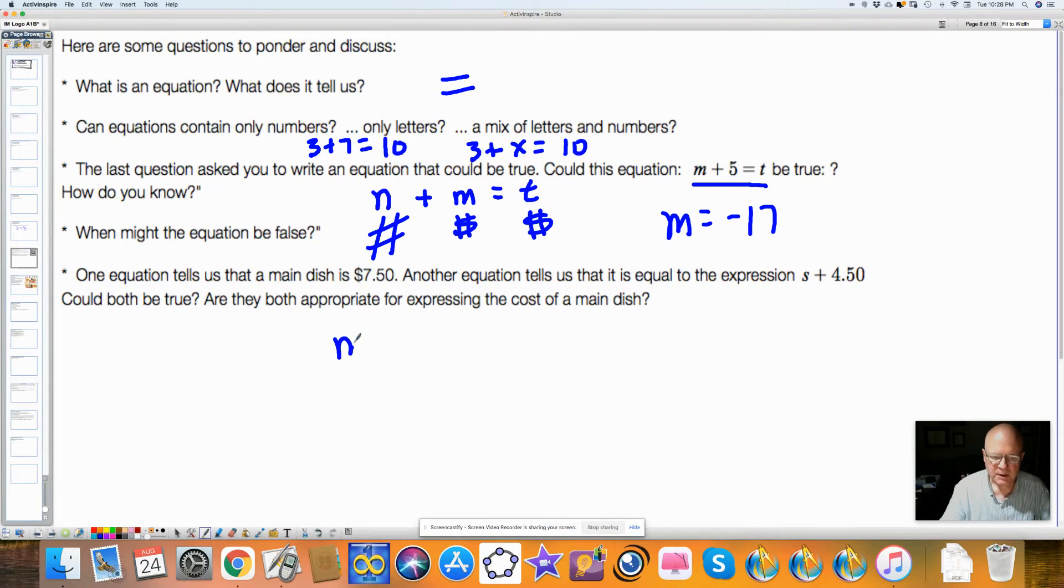Here, one equation tells us that the main dish is equal to 750. And another equation tells us that the main dish is equal to S plus 450. And could both of these be true? Why, sure they could. The main dish is 750. And the main dish tells us that it, the main dish, is equal to a side. So on the main plate, you're going to have maybe a piece of chicken or a steak or fish. And you're going to have some broccoli and mashed potatoes or something, the side. What this would tell us is that the side is going to be $3. If you subtract $4.50 from both equations, you set these equal, you get the side would have to be $3. Yeah, they could both be true.